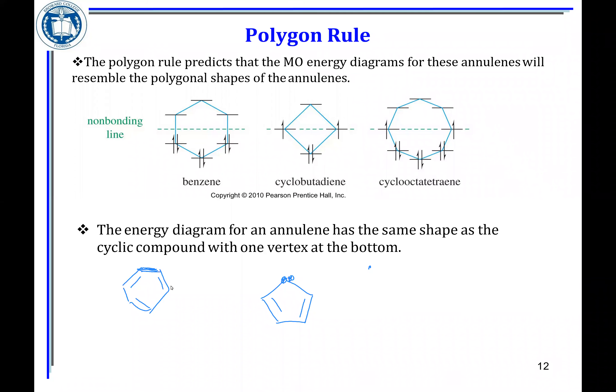Conditions for an aromatic system: the first condition is it must be cyclic, and the second condition is it must be conjugated.